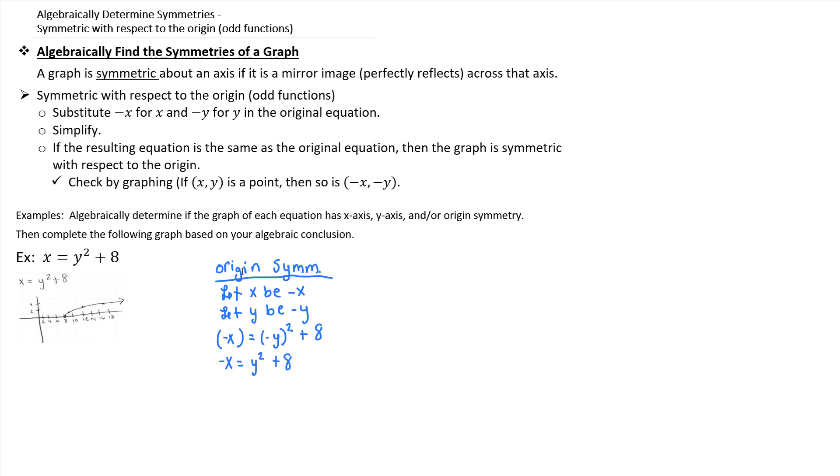And then notice that the right-hand side of the equation is identical, but the left-hand side is not. So what this means is those equations aren't identical because both sides would have to be identical. So you're not origin symmetric. So it turns out that this particular equation is symmetric with respect to the x-axis, not the origin and not the y-axis.